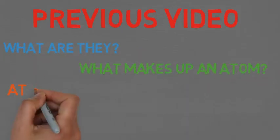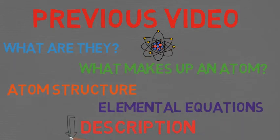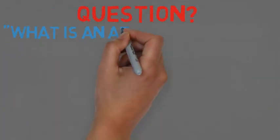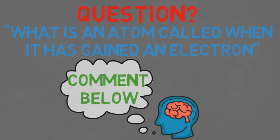If you don't understand what these are or need a quick refresher, the video will be linked in the description below. Quickly before we start, I'm going to pose a question that will be answered near the end of the video. Once you have the answer, comment in the section below and I'll choose some answers to shout out at the beginning of the next video. The question is: what is an atom called when it has gained an electron?